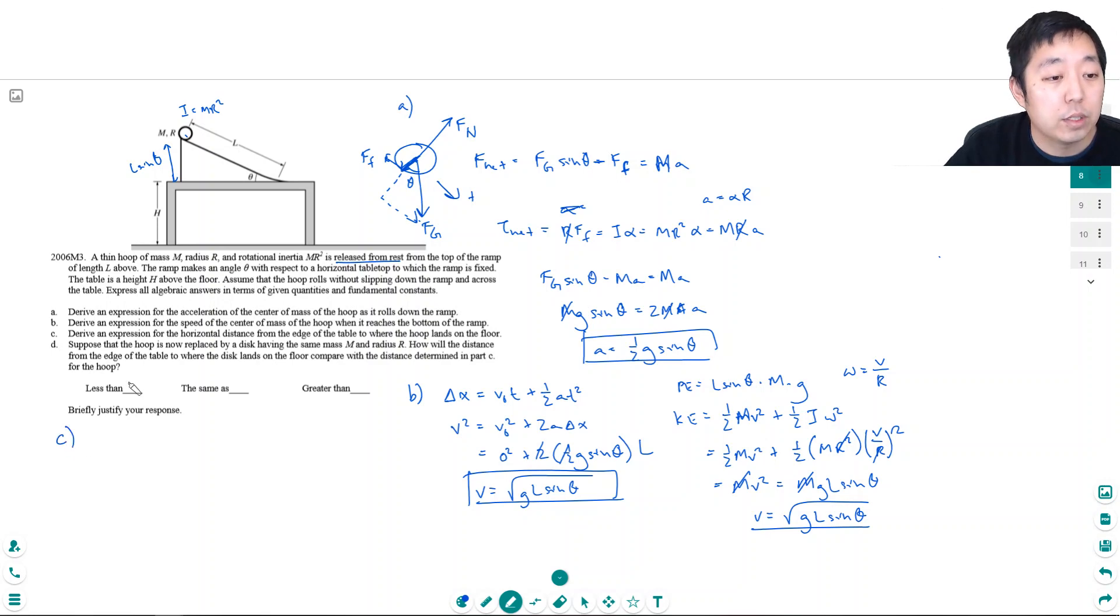Part C: derive an expression for the horizontal distance from the edge of the table to where the hoop lands on the floor. Its velocity will be constant at this point, moving at this velocity. The distance traveled is simply velocity times time. I know the velocity but need to find how long it's in the air.